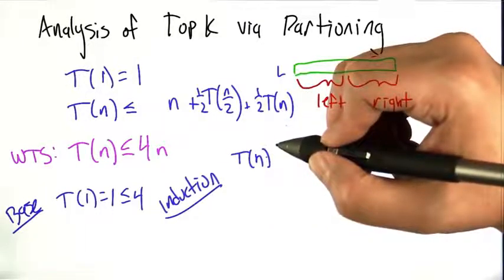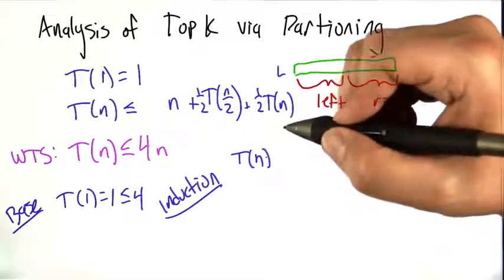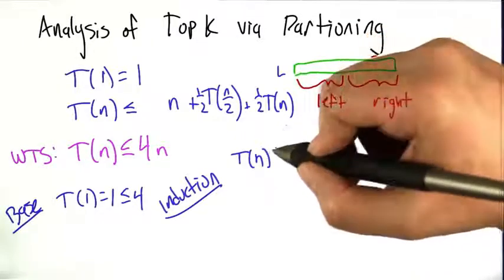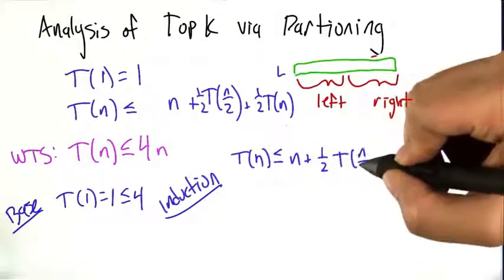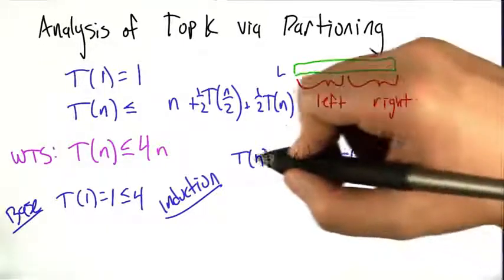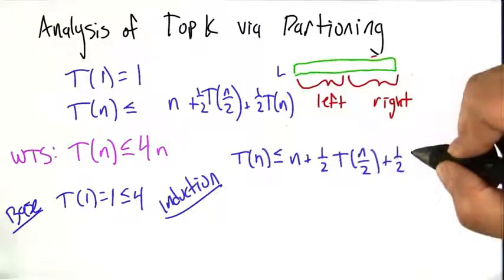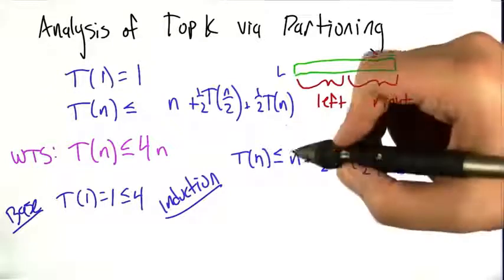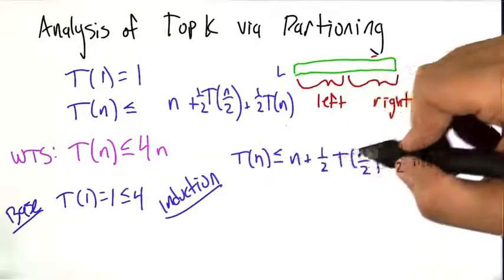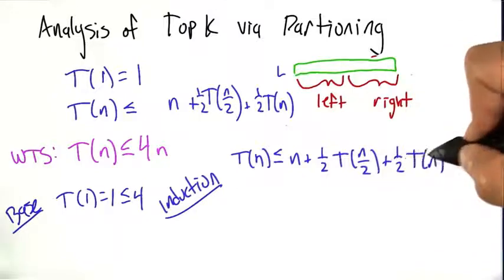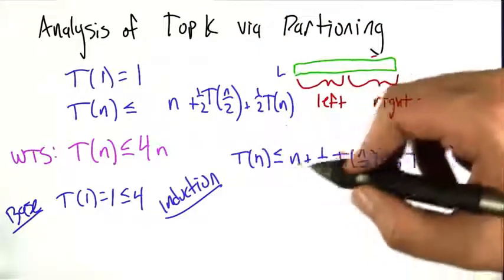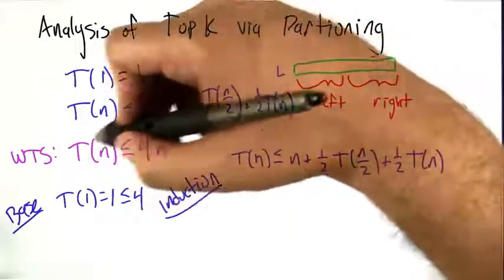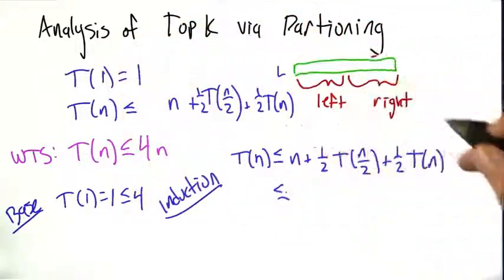So our base case is T(1) = 1, which is indeed less than or equal to 4. For our inductive step, we know from the structure of the algorithm that the time it takes to handle an input of size n is, on average, going to be less than or equal to n plus 1/2 T(n/2) plus 1/2 T(n), just like we argued before. And now we're going to use our inductive hypothesis that T(n) is less than or equal to 4n to get an upper bound on this quantity.